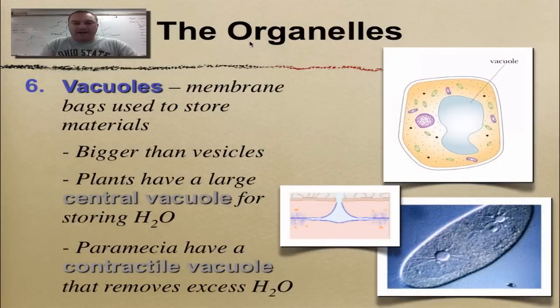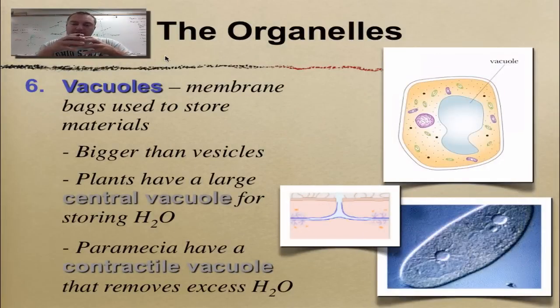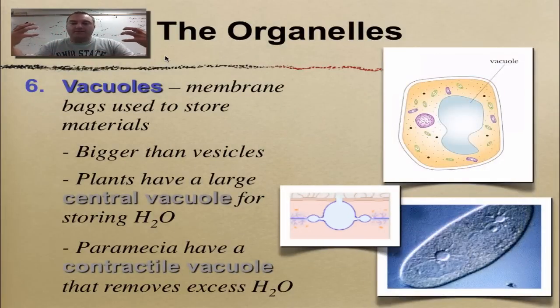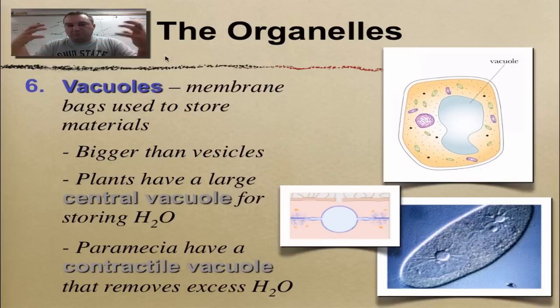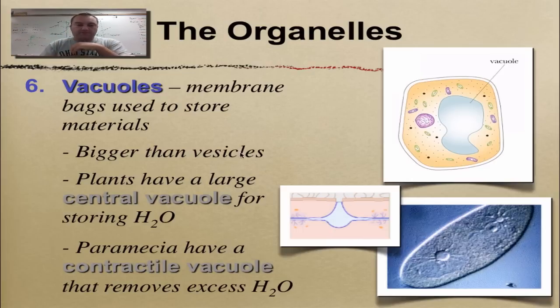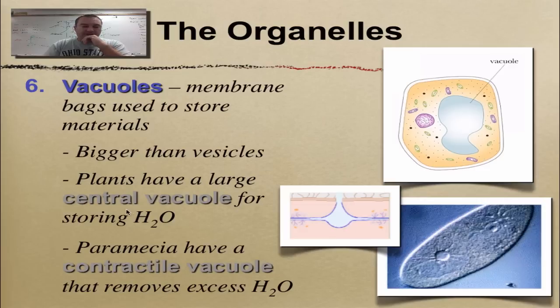Vacuoles are basically just like a vesicle except they're bigger — just a bigger box that you put stuff in. Remember: vacuoles are bigger than vesicles.